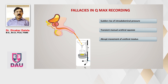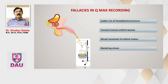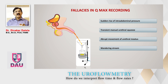There can also be an abrupt movement of the uroflowmeter by the patient, which changes the speed of fall of the stream in the funnel. Some patients wander their stream all around the entire funnel of the flowmeter. We should tell the patient beforehand not to do so, but if they do, this wandering stream can also have an impact on Q-max.